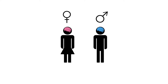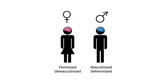During development, the body and the brain undergo either feminization and demasculinization or masculinization and defeminization. In most cases, the differentiated brain will lead to behaviors that correspond appropriately to the differentiated gonads.